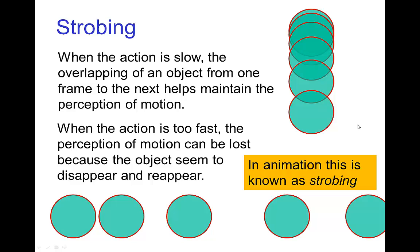On the other hand, when the action is very fast, the perception of motion can be lost. Instead of interpreting the sequence of drawings as being the same object at different places, the brain can imagine that the object has disappeared and a new object has reappeared somewhere else. This disruption of the perception of motion in animation is called strobing.